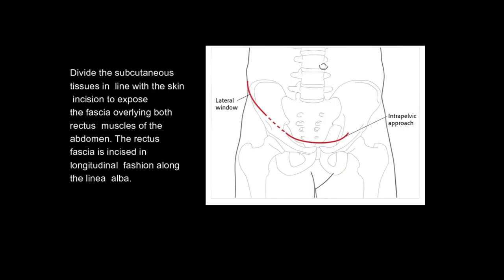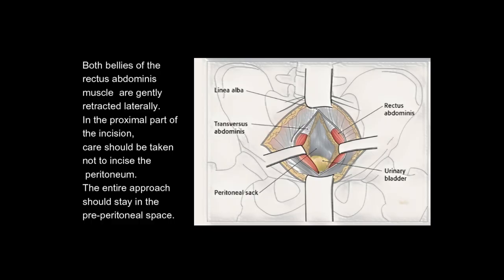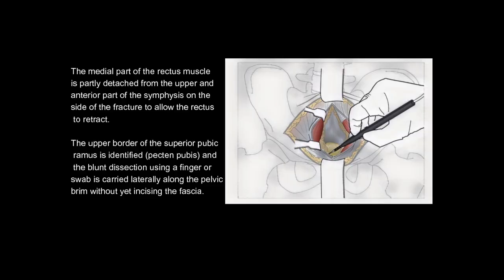Divide the subcutaneous tissues in line with the skin incision to expose the fascia overlying both rectus muscles of the abdomen. The rectus fascia is incised in longitudinal fashion along the linea alba. The line of incision is more easily identified by pressing gently in the midline of the muscles proximally. Both bellies of the rectus abdominis muscle are gently retracted laterally. In the proximal part of the incision, care should be taken not to incise the peritoneum. The entire approach should stay in the pre-peritoneal space. The medial part of the rectus muscle is partly detached from the upper and anterior part of the symphysis on the affected side of the fracture to allow the rectus to retract.